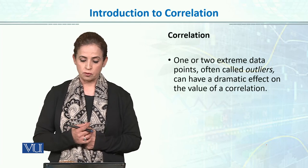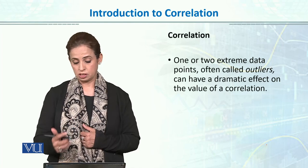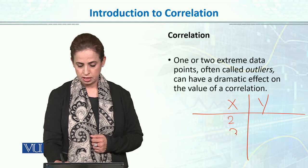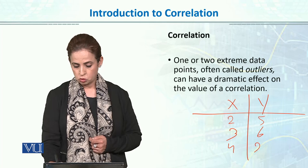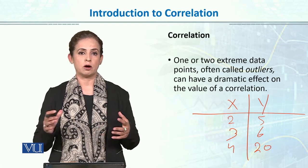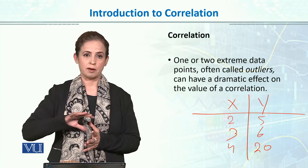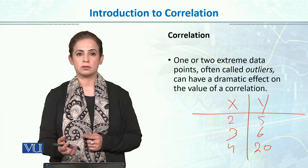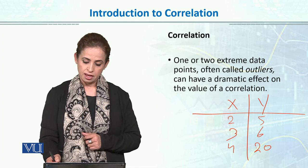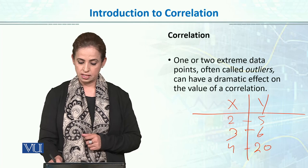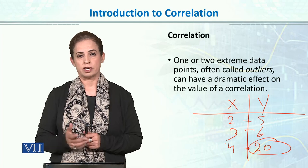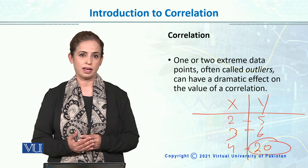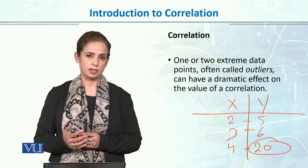One or two extreme data points, often called outliers, can have a dramatic effect on the value of the correlation. For example, if X values are 2, 3, 4 and Y values are 5, 6, and then 20, even one or two extreme outlier values — data values that are very far from the average scores — can dramatically affect the correlation coefficient. Even though X and Y are both increasing, because of this extreme outlier value, the correlation is going to be affected dramatically.